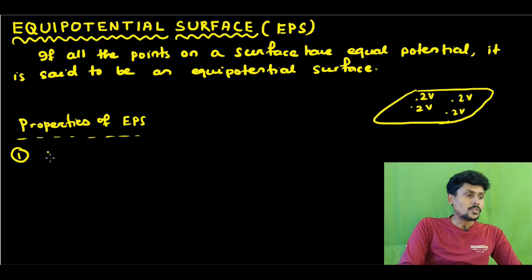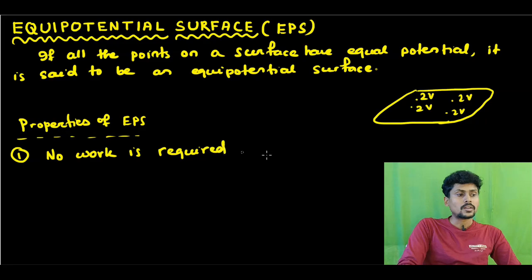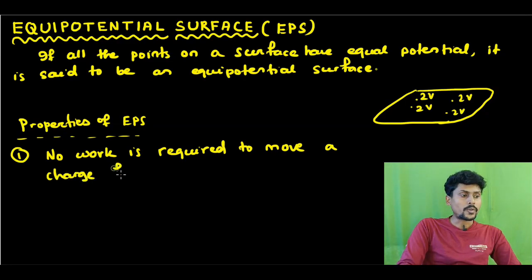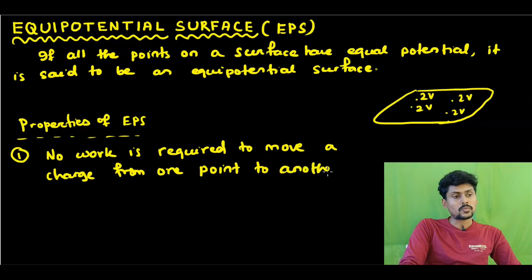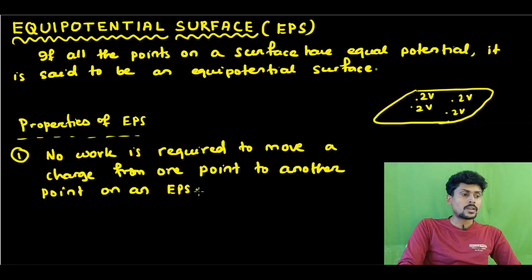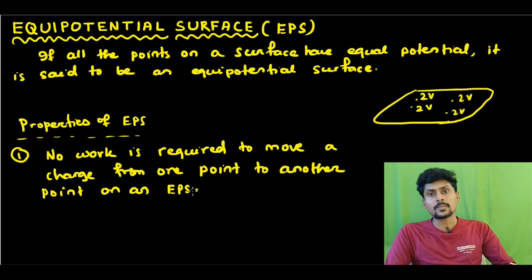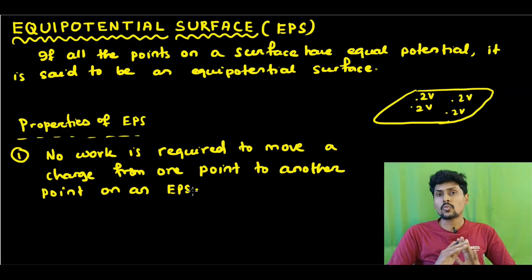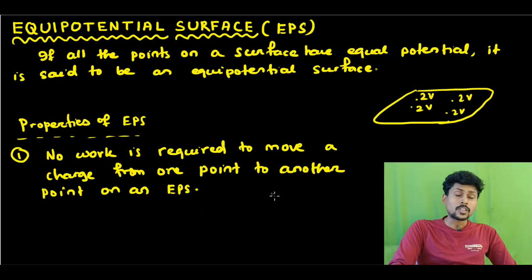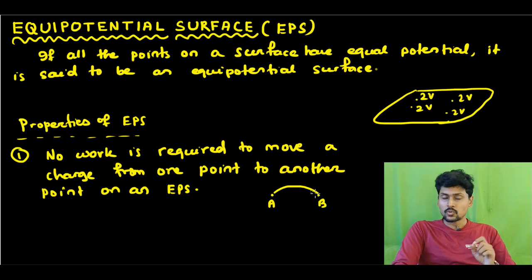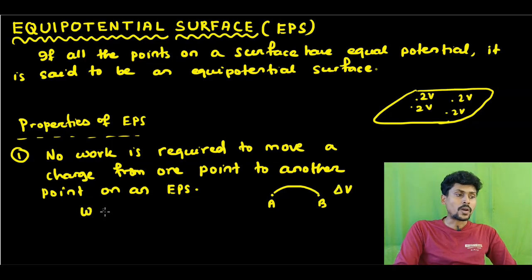The first property is: no work is done — no work is required to move a charge from one point to another point on an EPS. No work will be done. Why? Suppose a charge moves from point A to point B, and the potential difference between these two points is delta V. So work is equal to Q into delta V.